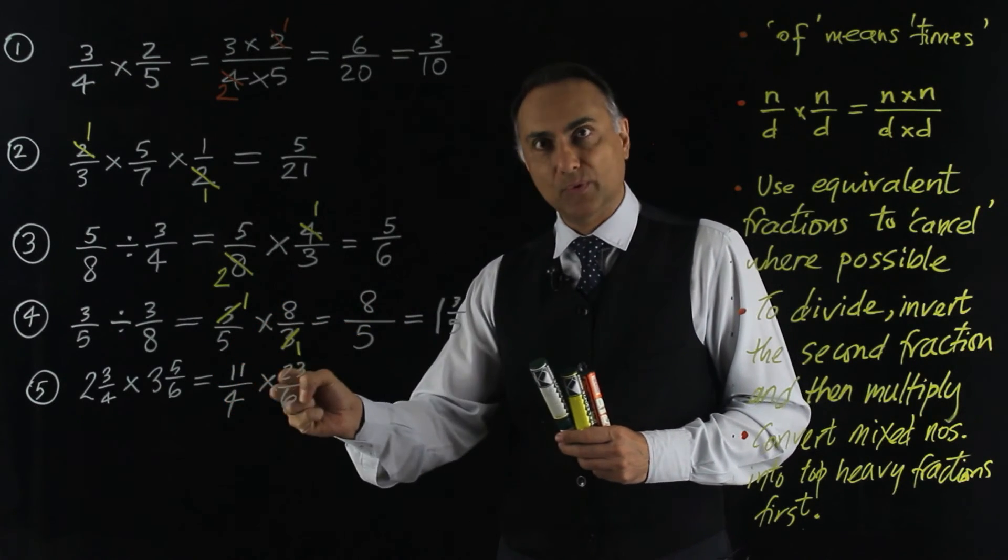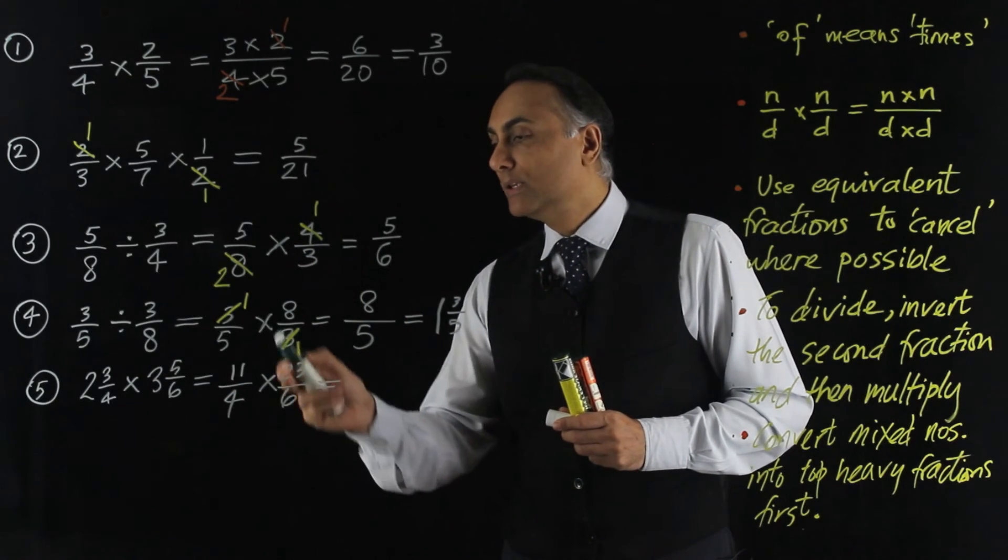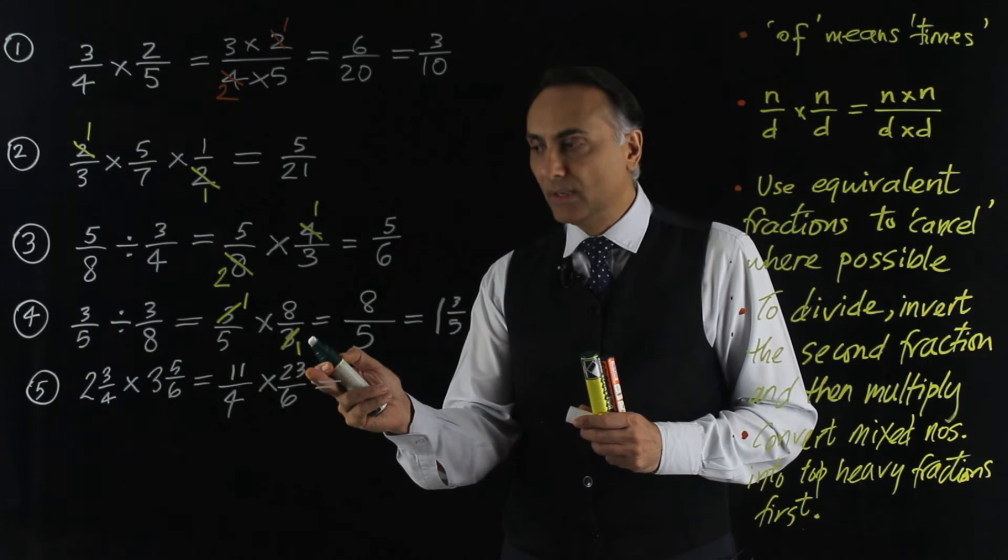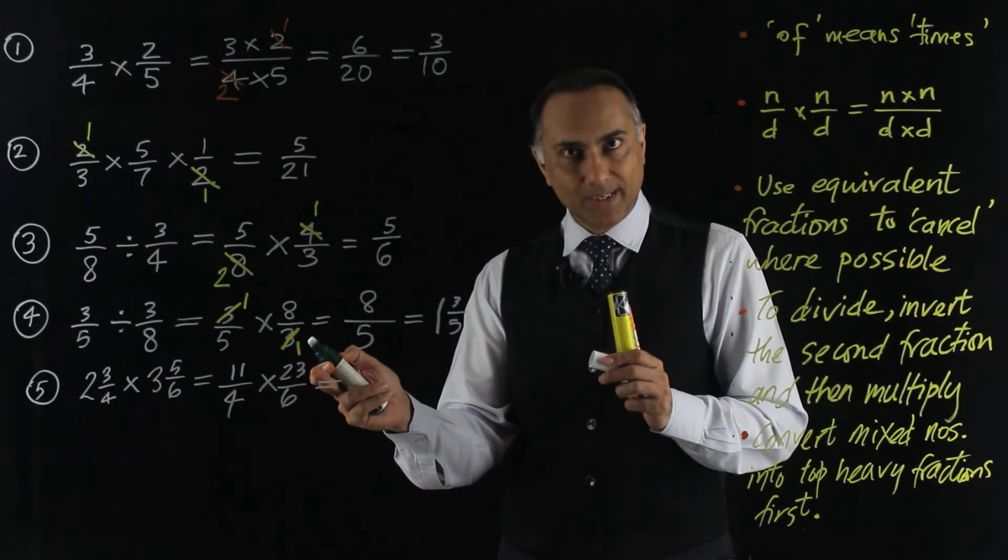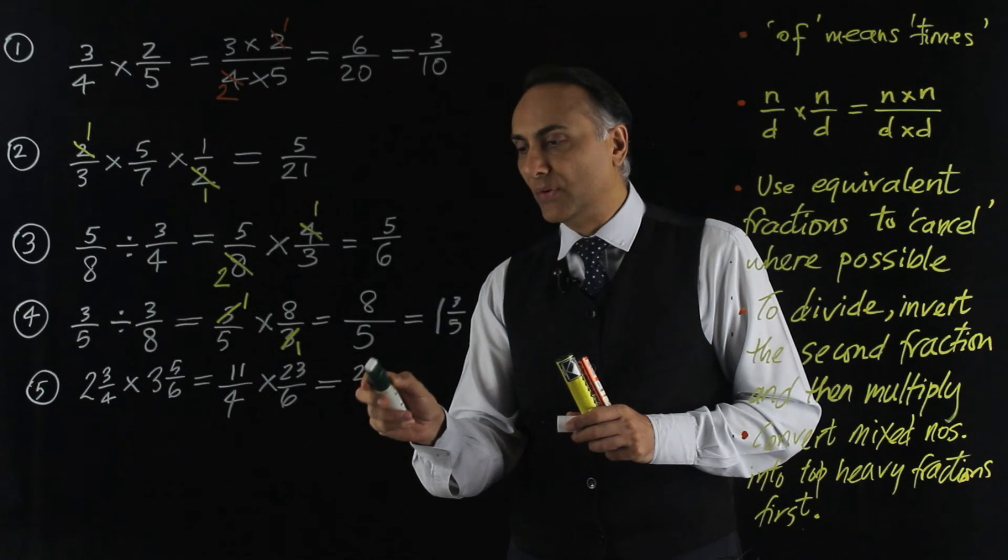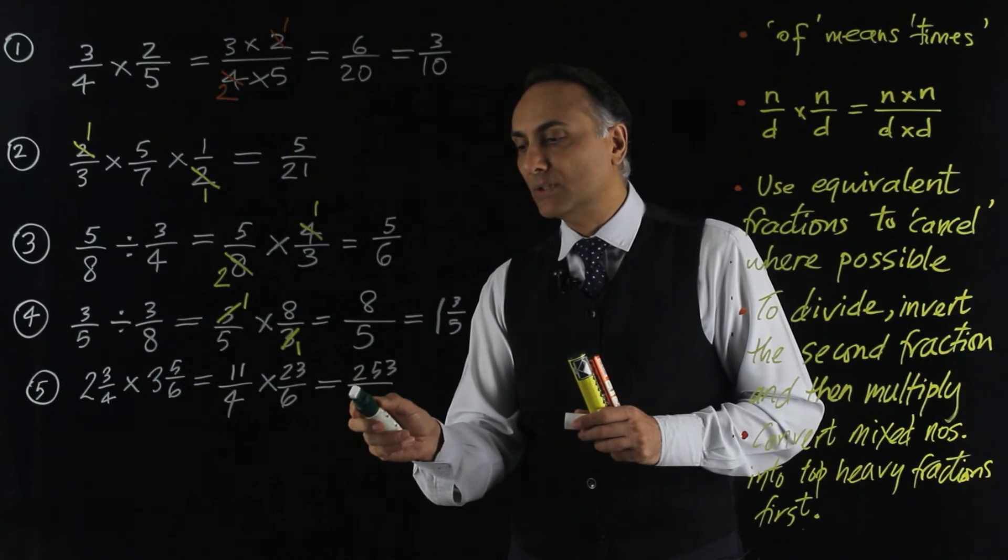And so I won't be able to reduce this. So I just multiply out. So it's 11 times 23. So if you do 10 times 23 is 230. Plus another 23. So that's 253.